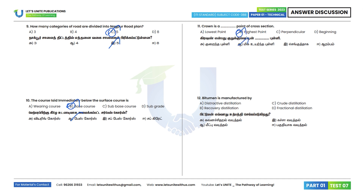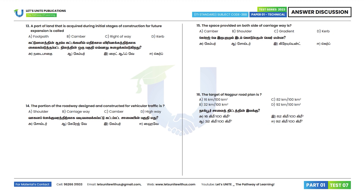12th question: Bitumen is manufactured by fractional distillation method — it is not a fractional distillation method. Option D. 13th question: A part of land acquired during the initial stage of construction for future expansion is called right of way. Option C is the correct answer.